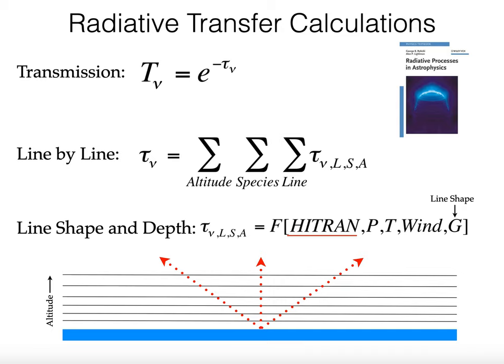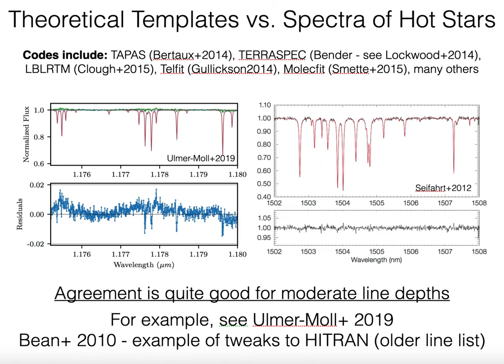The other thing you could do is calculate a telluric absorption spectrum via a radiative transfer calculation. The idea is to start with a database of molecular line transition data—HITRAN is probably the most famous example. You have a model of Earth's atmosphere broken up into layers, and you sum at each wavelength the cumulative optical depth from all absorbing species. There are many great codes in the literature: Tapas, Terraspec, LBL-RTM, Telfit, Molecfit, and many others. The agreement is really quite good for moderate line depths.